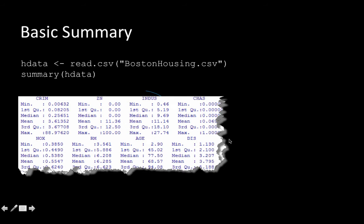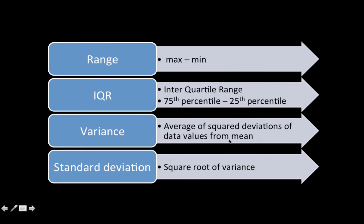Having looked at the basic summary, let us look at some descriptors of the spread of data. Suppose you have 100 sales data numbers for 100 companies. We can find the average or median — measures of central tendency — but we are also interested in the spread of the data. One measure of spread is the range, which is simply the maximum value minus the minimum value — the overall range within which all the values fall.